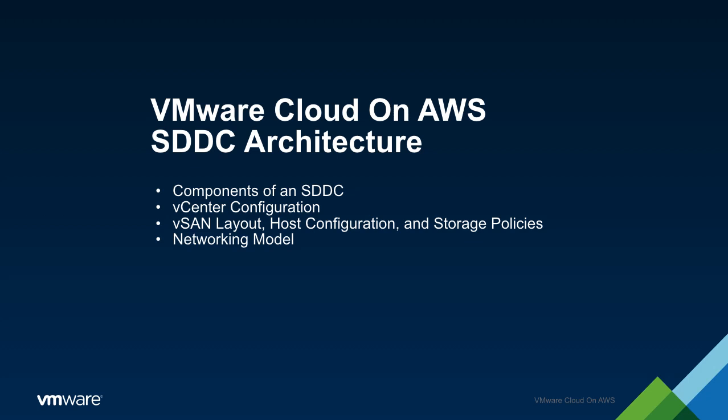As a prerequisite to deploying an SDDC, it is important to first understand a few of the basic architectural details of that SDDC. In this section, we will discuss the standard components of an SDDC, provide an overview of both the vCenter and vSAN configurations within the SDDC, and discuss the networking model used within VMware Cloud on AWS.